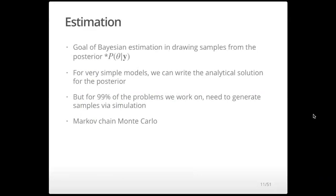The goal of doing Bayesian estimation is to draw samples from that posterior distribution — the probability of theta given our Y. For very simple models, we can write the analytical solution down to the posterior and use sampling functions in R. Like with the coin flip example, there's a very simple known solution — just a beta-binomial distribution. But in the real world, I'm never able to use those fancy tricks. I always have to use more complicated approaches because we can't write down the distribution of theta given Y.